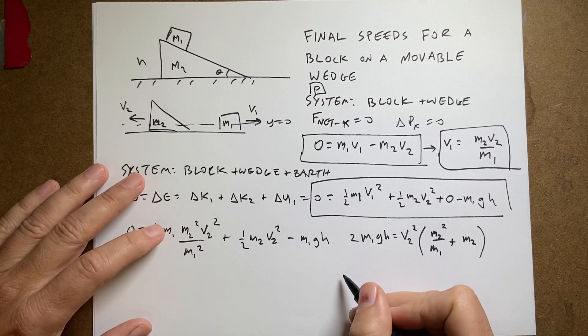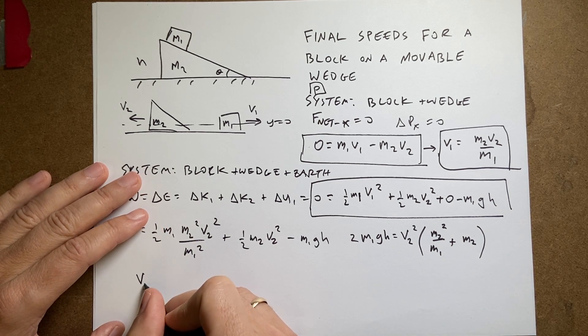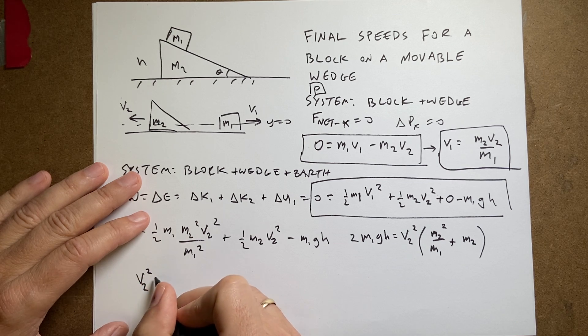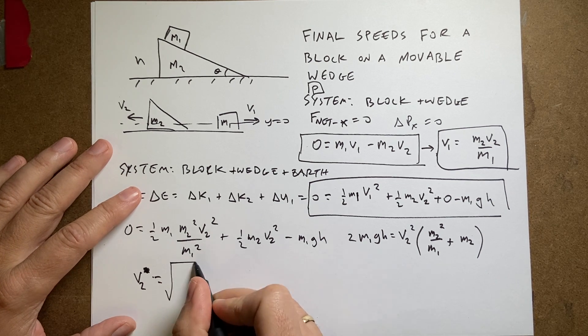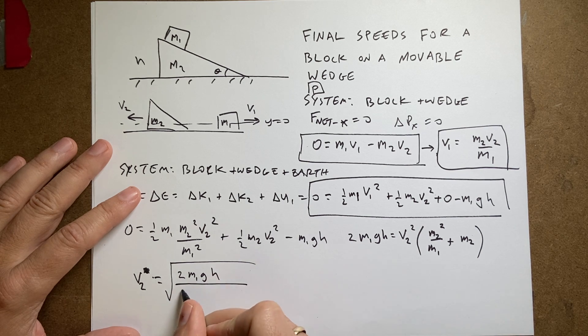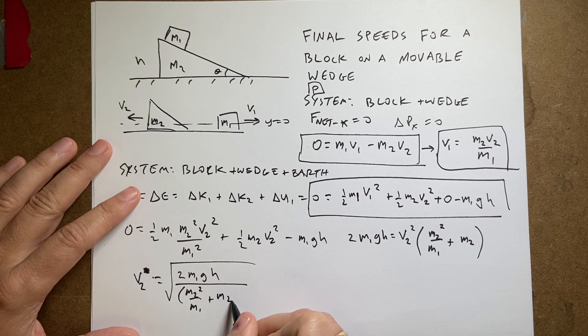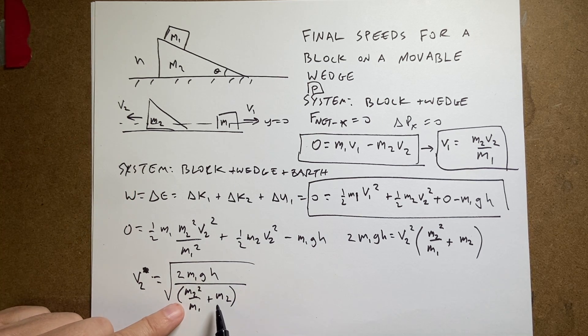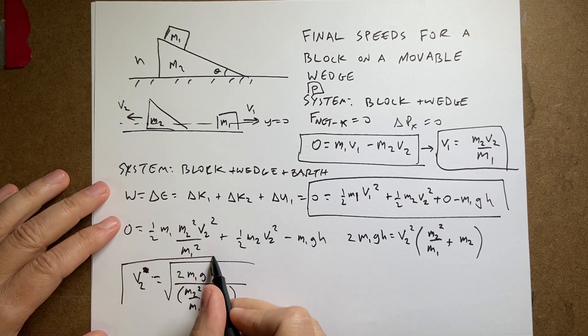Now I want to solve for V2 squared. So I'm going to add this to both sides and factor out the V2. So I get M1 GH equals V2 squared times, now right here I have M1 M2 squared over M1 squared. So this is going to be, and I'm going to multiply both sides by 2. So I get rid of that 2. So I get this is going to be M2 squared over M1 plus M2. Now I'll divide both sides by that. And I get V2 squared, I could take the square root. Let's do it all together. Because what the heck, right? Let's live dangerously. Let's just go ahead and take the square root.